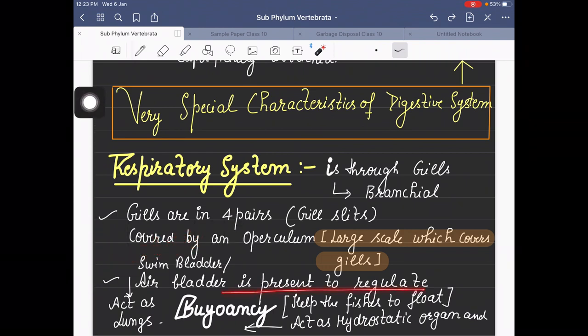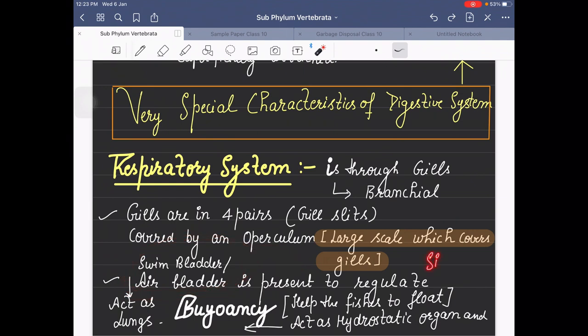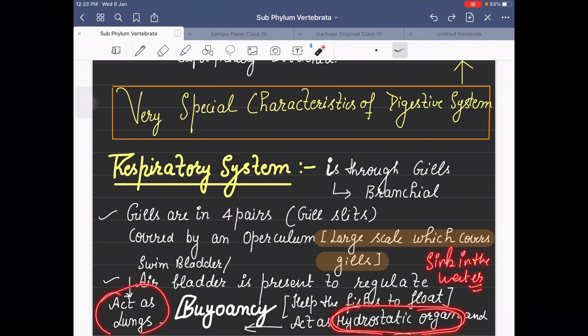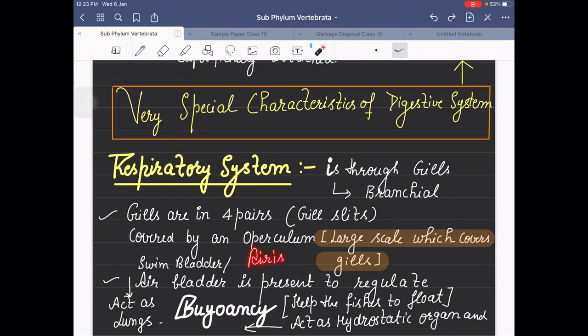Another characteristic feature of bony fishes is the air bladder or swim bladder. It helps these fishes to float and prevents them from sinking in water. They regulate buoyancy. It acts as a hydrostatic organ. When air is filled, it inflates like a balloon. Air bladder is absent in cartilaginous fishes but is present in bony fishes, where it maintains and regulates buoyancy.